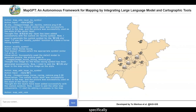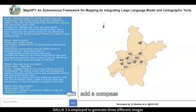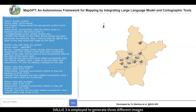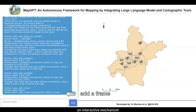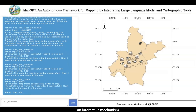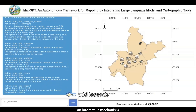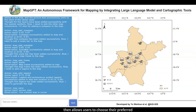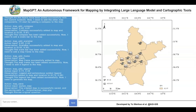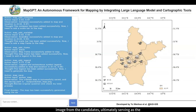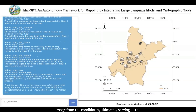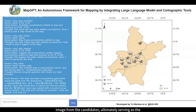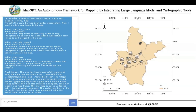Specifically, DALL-E 3 is employed to generate three different candidate images. An interactive mechanism then allows users to choose their preferred image from the candidates, ultimately serving as the designated symbols.